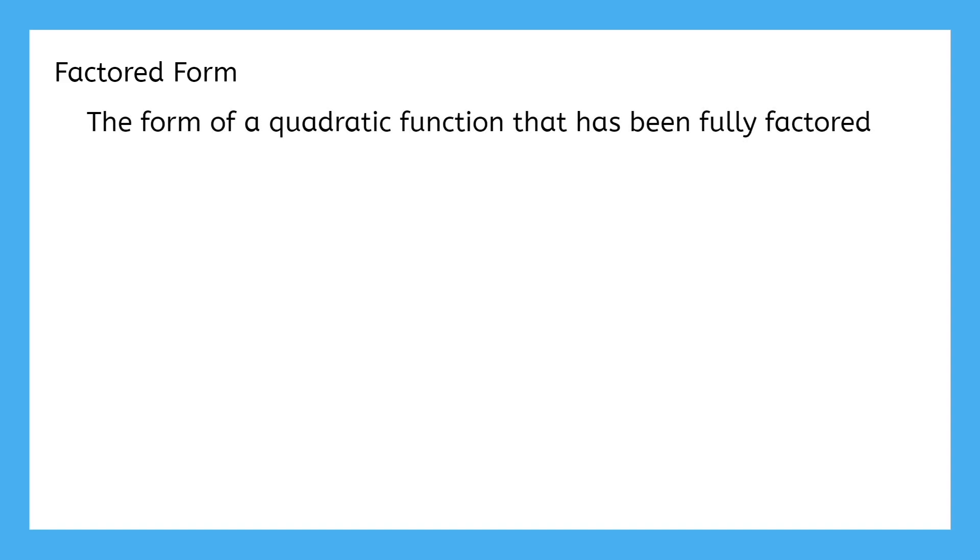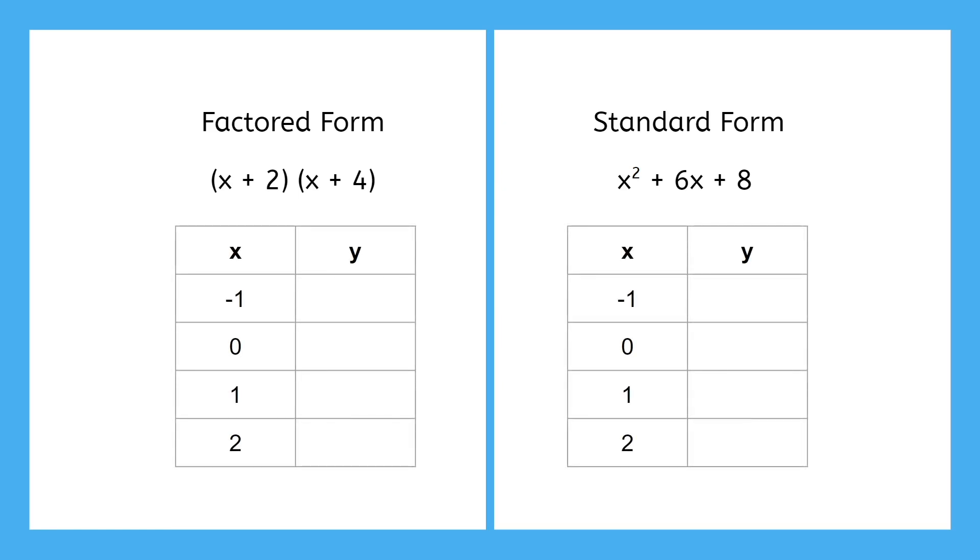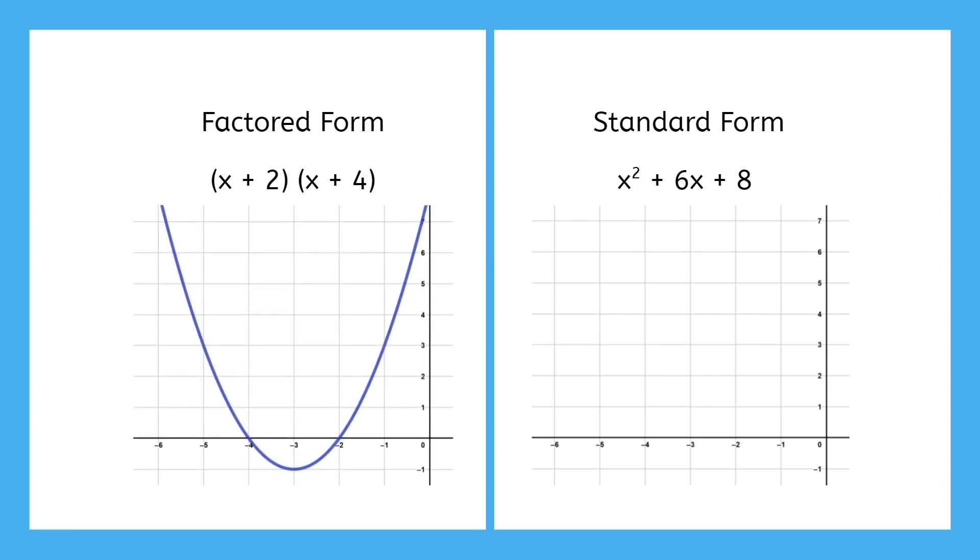It's the form you get when you take a quadratic function and fully factor it. The function x² + 6x + 8 is in standard form. Its factored form would be (x + 2)(x + 4). These two are the same function. If we input the same values to both, the outputs will be the same. So if we wanted to graph this quadratic function, we could graph its factored form and the graphs would be perfect matches. Same function, two different forms.